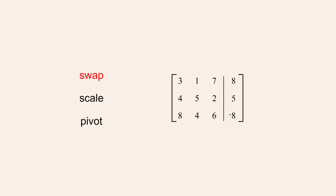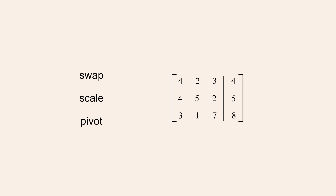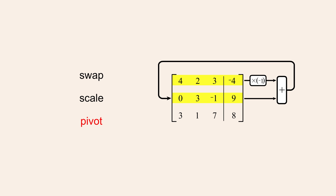The swap operation has no effect since it only changes the order in which the matrix rows are listed. Likewise, the scale operation, which multiplies any row by a non-zero constant, does not affect the planes since any multiple of a matrix row has the same graph as the original row. Only the pivot operation changes the planes, since adding a multiple of one row to another row changes the solutions and graph of the equation which that row represents.